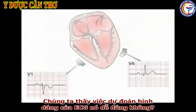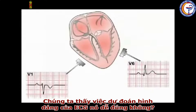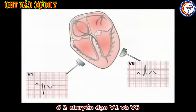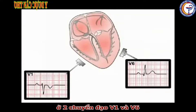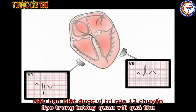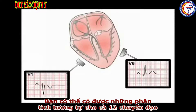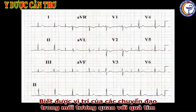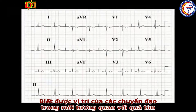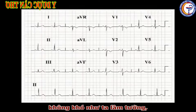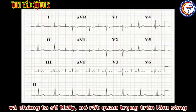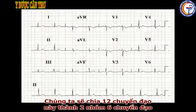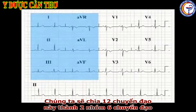We've seen how easy it is to predict the form of the ECG readout in two of the chest leads, V1 and V6. If you know the position of each of the 12 leads of the ECG relative to the heart, you can carry out a similar analysis in all 12 leads and build a predicted ECG. Learning the position of the leads is not as difficult as it sounds, and as we'll see later, pays dividends in clinical practice. Consider the 12 leads in two groups of six.